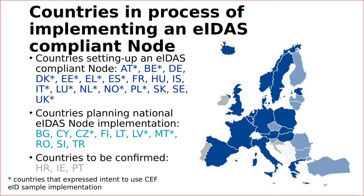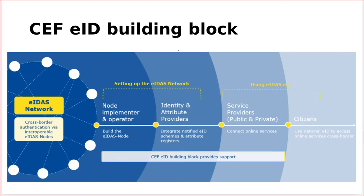We can say that a large number of countries within the European Union are using the Safe EID building block to build a cross-border identification mechanism within the EU. This building block is responsible for building the technical mechanism to enable the exchange of identity between countries.